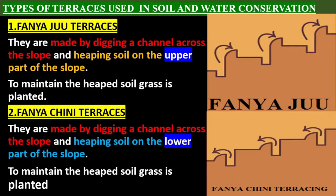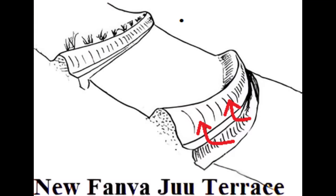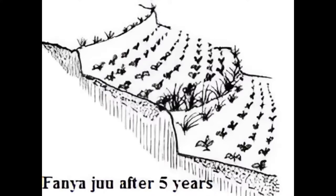Types of terraces used in soil and water conservation. Fanyaju terraces are made by digging a channel across the slope and heaping soil on the upper part of the slope. To maintain the heaped soil, grass is planted on top of the heap.